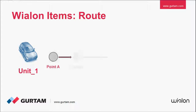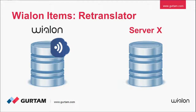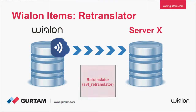You use Wialon primarily to make your logistics more efficient. Route is an item that helps you do it by creating detailed routes, schedules, and rounds. Finally, Retranslator is an item that enables you to resend the data stored on Wialon to another server, either if you choose to do so, or if you are obliged to do so by law.